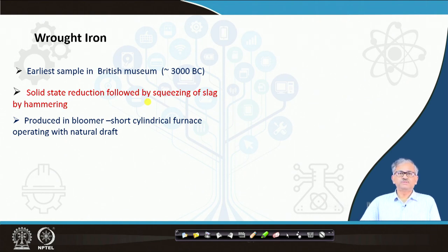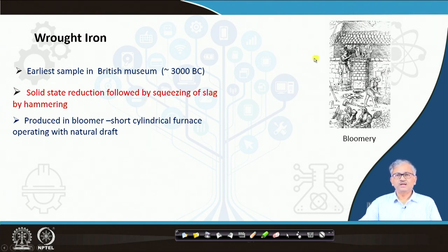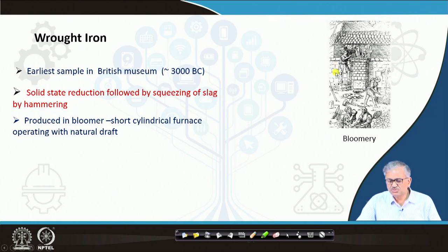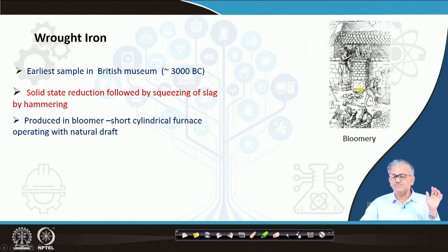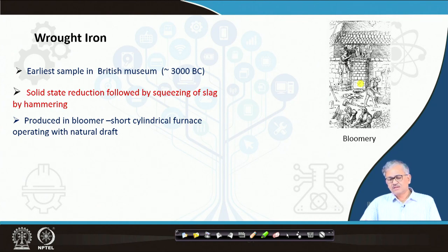It is produced in the bloomery — basically a short cylindrical furnace operated with natural draft — and you can find a picture of it. There is a hole and the air goes through it by natural draft. They made a right cylindrical furnace made of stone, and inside they used to pour iron ore over coal. By natural draft the air would go, and they used to cook for a long time — say one night — and by morning they would get some metalized iron, the iron ore could be reduced, and they would take out that iron and hammer it.